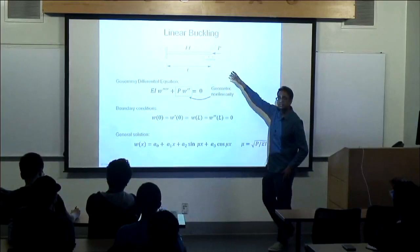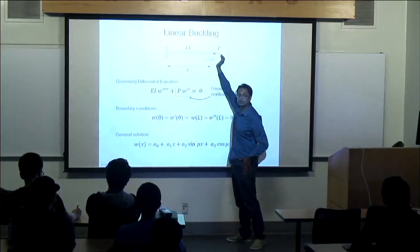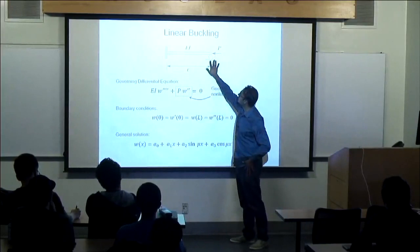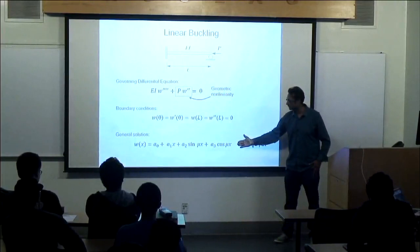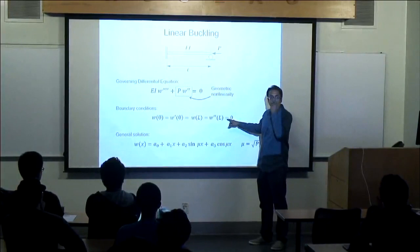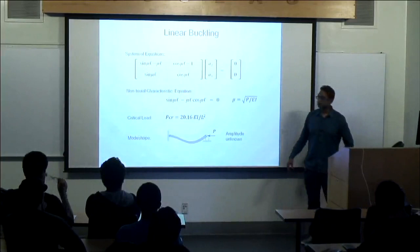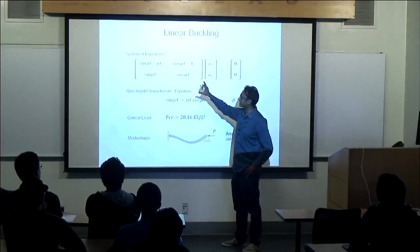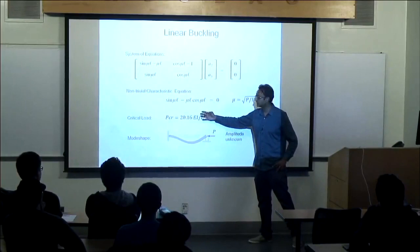The boundary conditions for this problem: a clamped end on the left-hand side where deflection and slope are zero, and at the right-hand side there's no moment applied so W double prime is zero. With this governing equation and boundary conditions, the general solution is given by the equation at the bottom, where mu equals the square root of P over EI. I have four boundary conditions and four unknowns, leading to an eigenvalue problem. The critical load for this scenario is 20.19 EI over L squared.